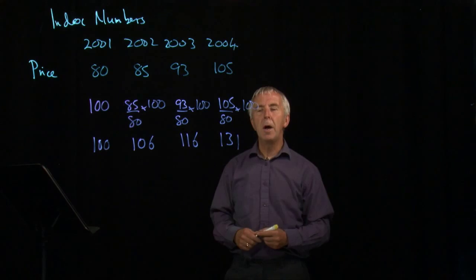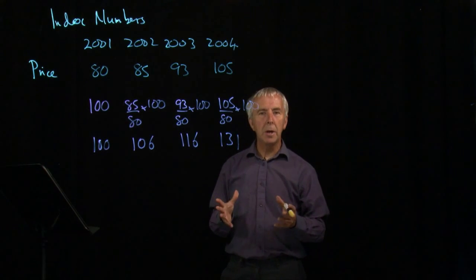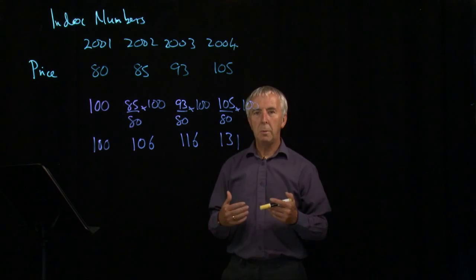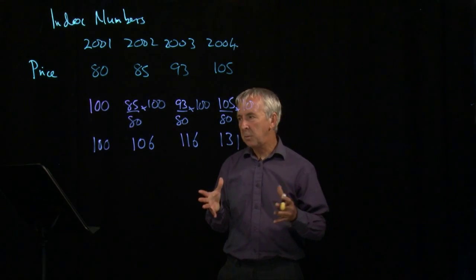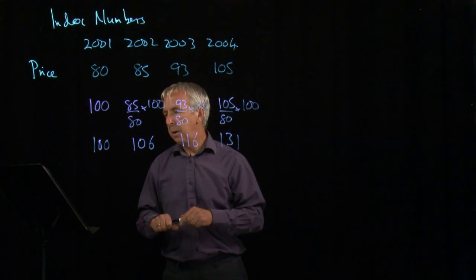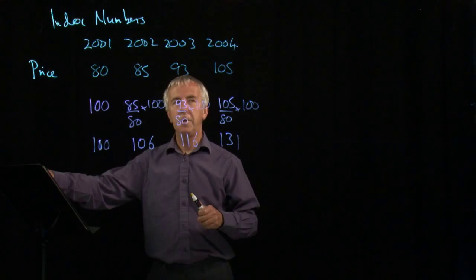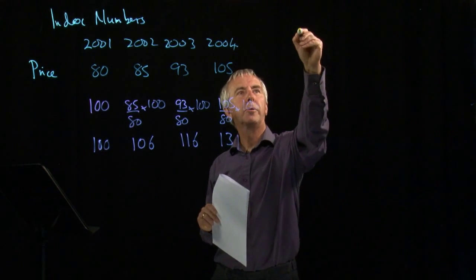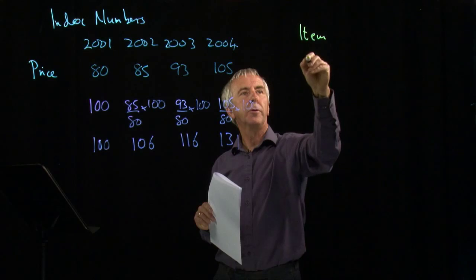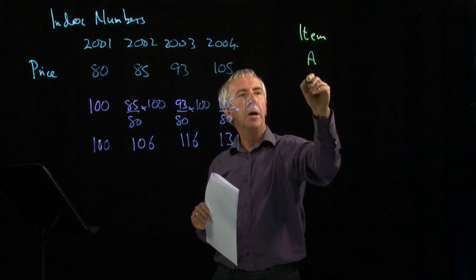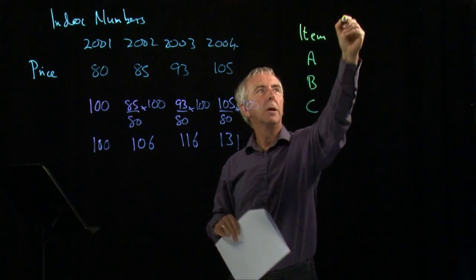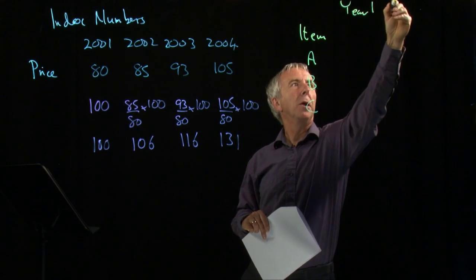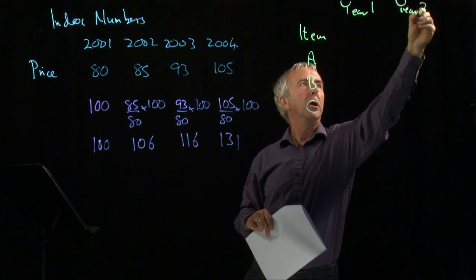Most often we want to find a combined price index of a number of goods and we have to aggregate them together or add them together. Let's look at a simple example of this. Suppose we had three goods, three items — A, B, and C — and we'll have year one and year two.